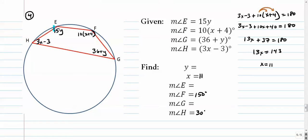Okay, do the other one. Let's go for the y variables. Let's do 15y plus 36 plus y equals 180. That's 16y plus 36.